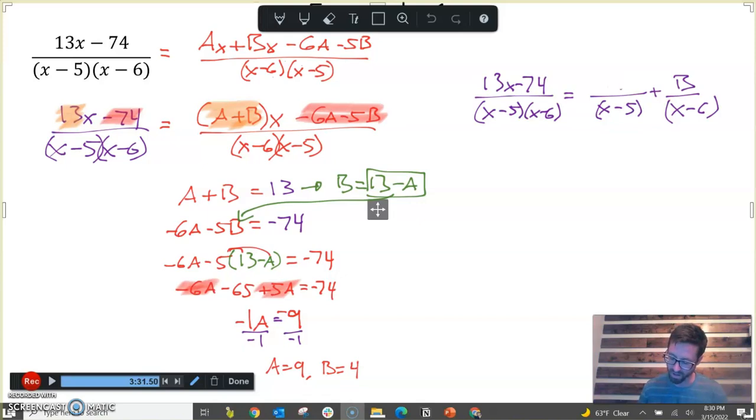So our actual answer here is not that A equals 9 and B equals 4, but it's these fractions. We know that A here is 9 and B here is 4. If you were to take these two fractions and add them together like a rational expression by getting a common denominator, boom, you would end up there.